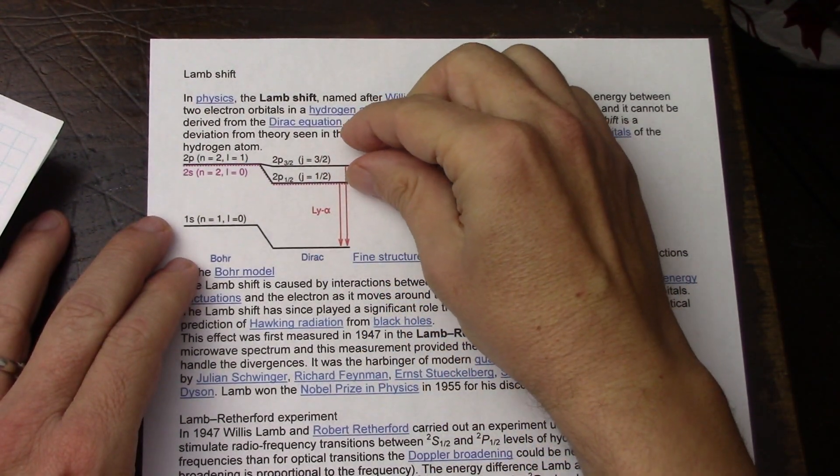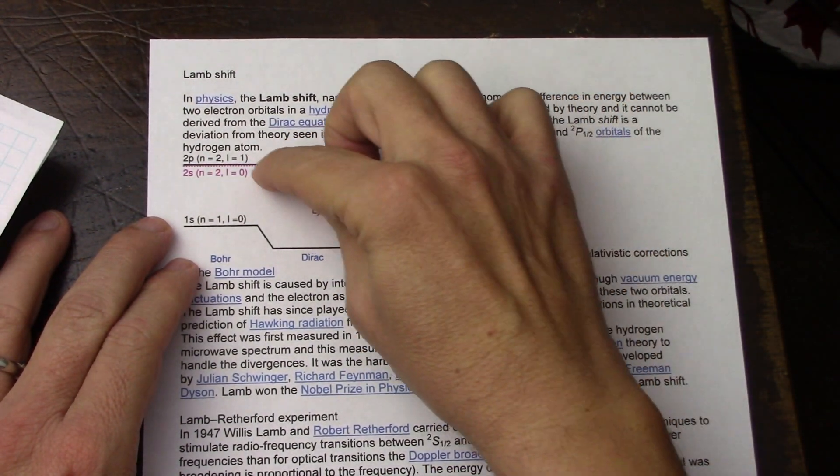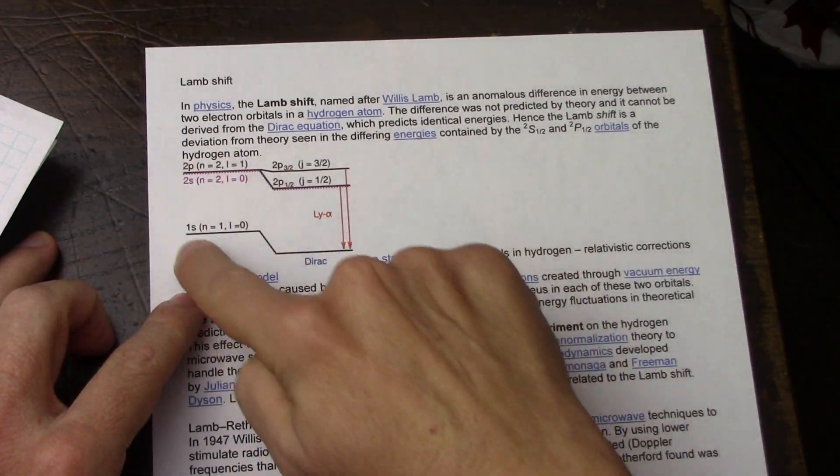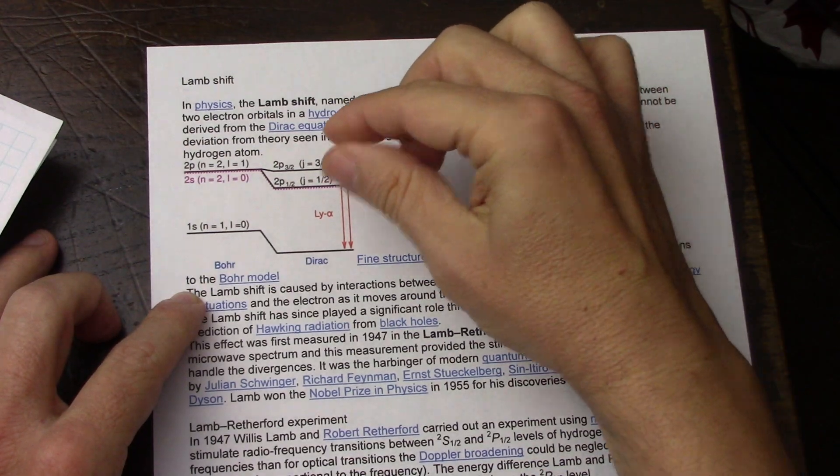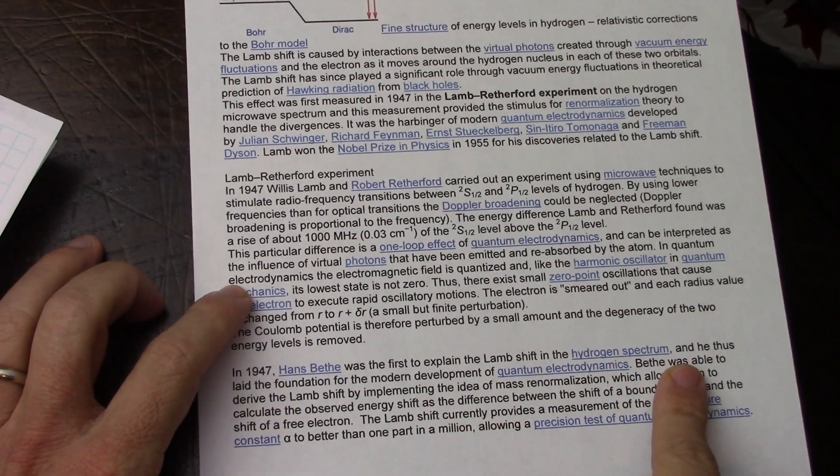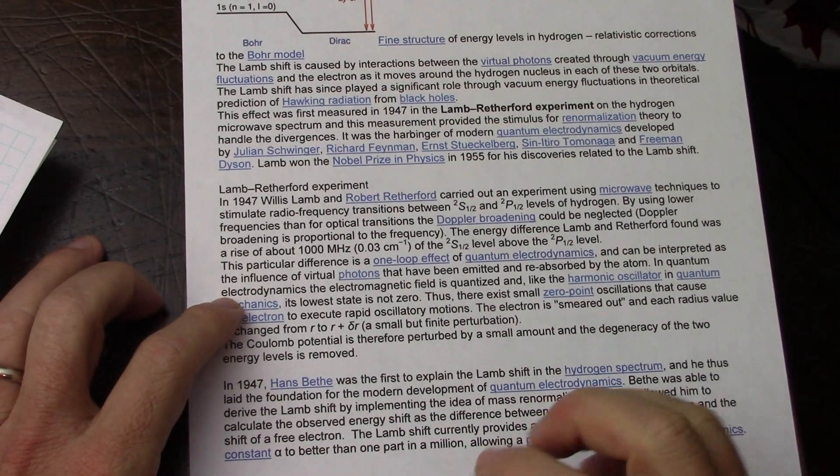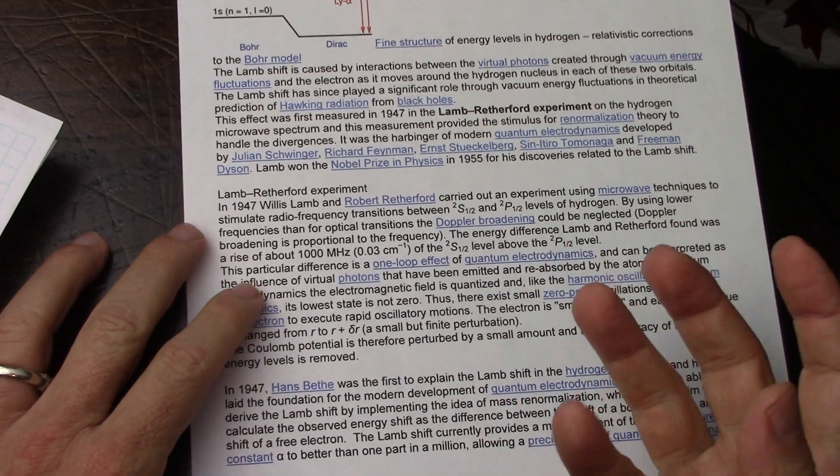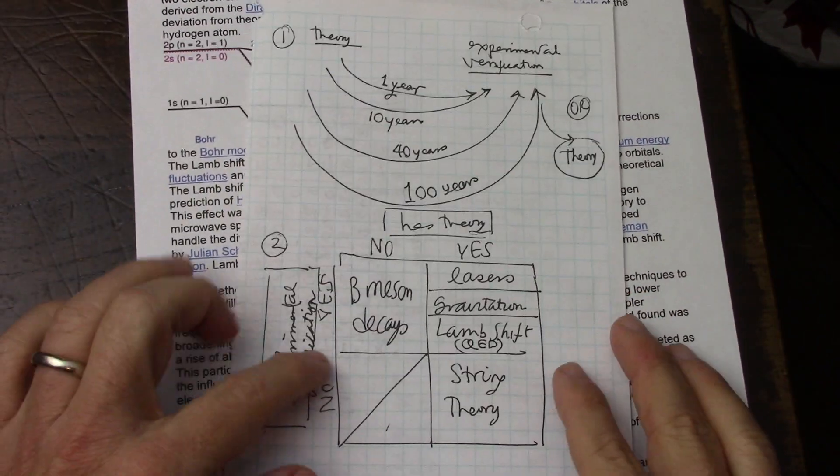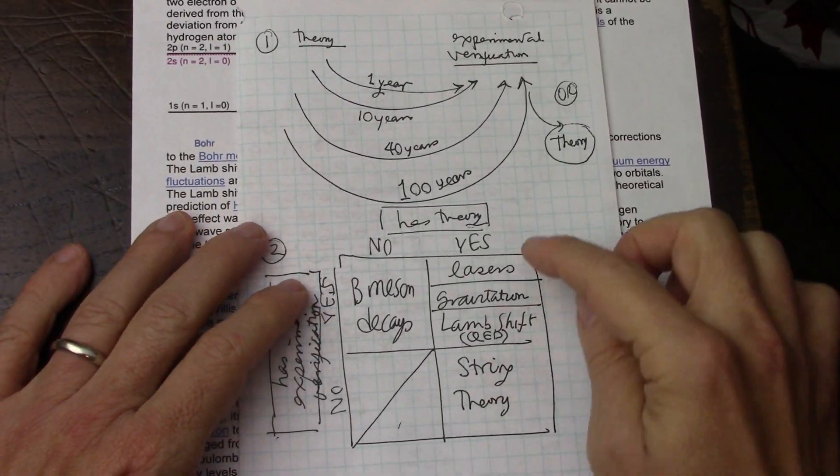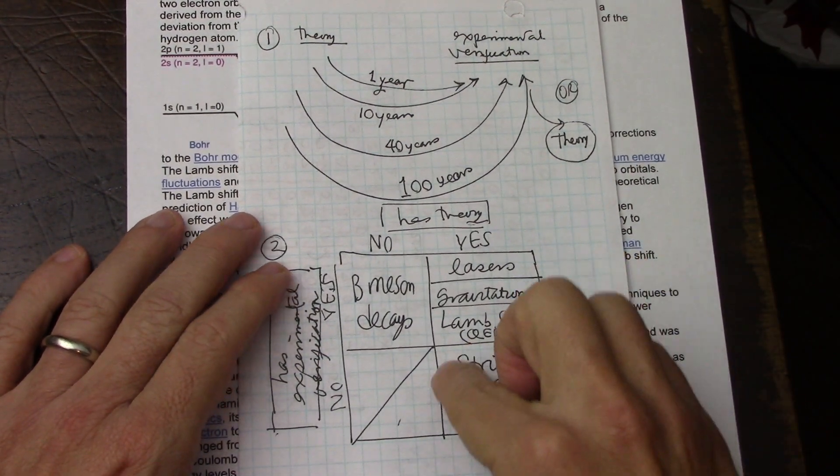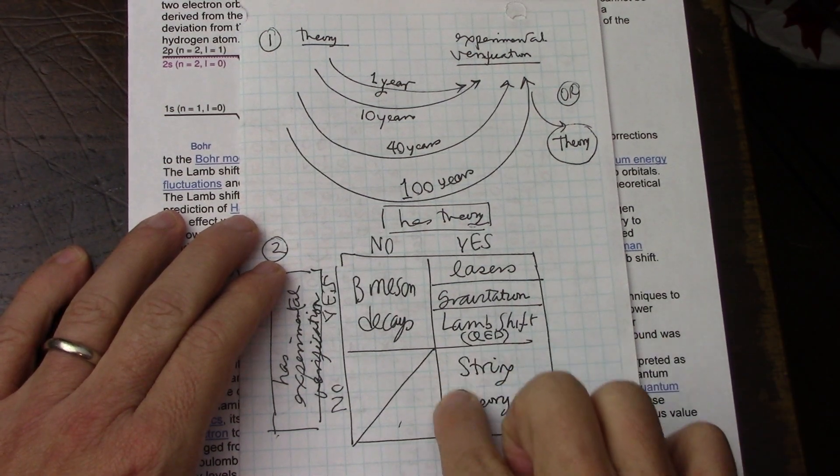It was measured, and there was a shift between two of the 2P levels of hydrogen, and in theory, when you did quantum mechanics, there should be none. So they found a difference, and then people had to explain it. Hans Bethe did some basic explanation, but it really required a full theory, which is quantum electrodynamics, and it's the self-energy of the electron.